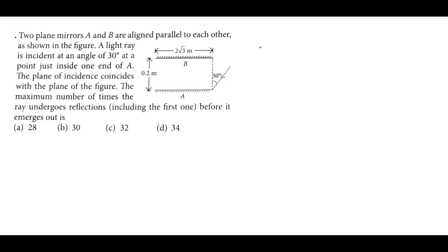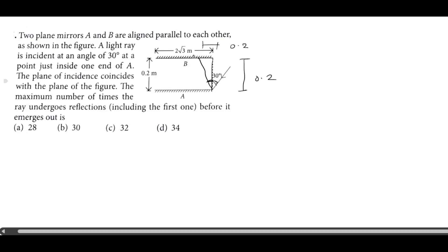If we look at the reflection here, if this angle is 30 degrees it will reflect, then this angle is 30 degrees. This angle is 30 degrees. This angle is 0.2. This horizontal length is 0.2. The vertical height is 0.2.